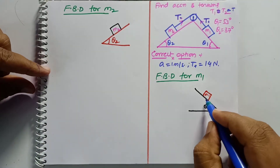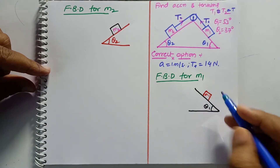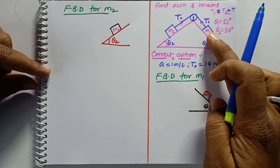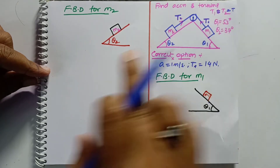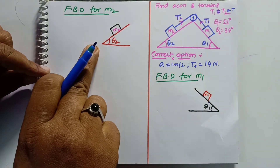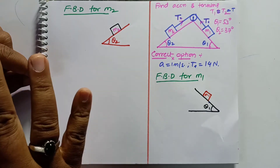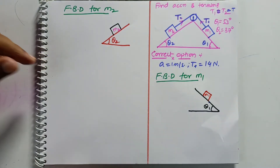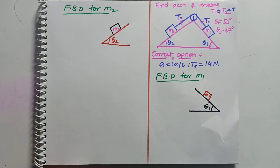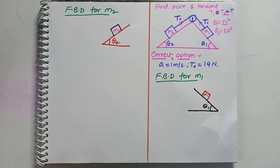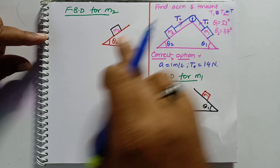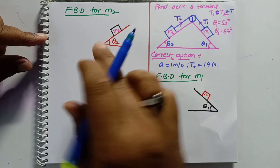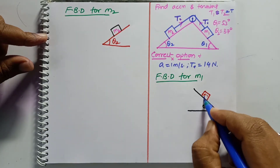Here I have taken the free body diagram of mass m1, and the left body is separately taken here. Let us discuss what equations we are going to solve. The right side body's free body diagram is here and the left side body's free body diagram is here. So how many forces are acting on this?